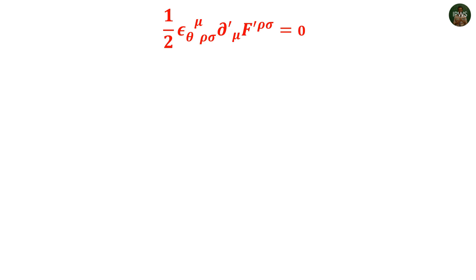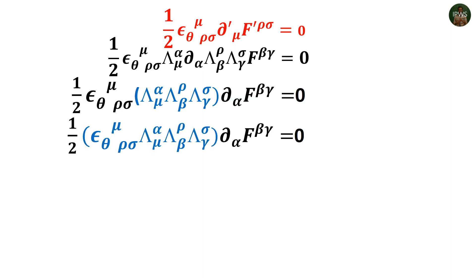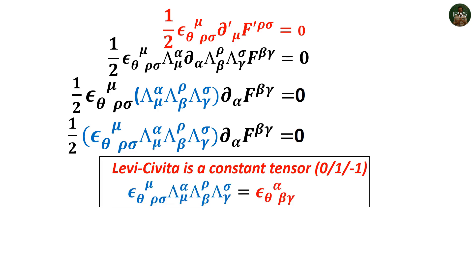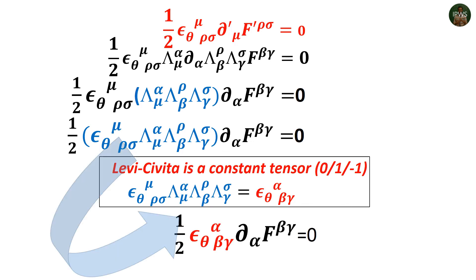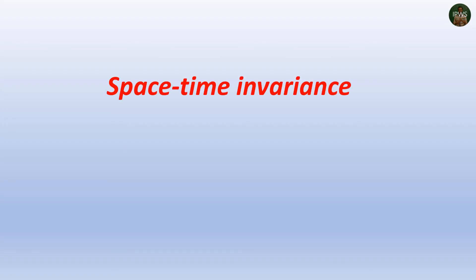For the source-free combined equation, (1/2) epsilon_(theta)^(mu)_(rho sigma) del'_mu F'^(rho sigma) = 0, the transformations yield three lambdas. Contracting these with the Levi-Civita tensor — which is constant with values 0, +1, or -1 — gives epsilon_(theta)^(alpha)_(beta gamma) del_alpha F^(beta gamma), which is exactly the untransformed Maxwell's form. It is thus proved that the Lorentz transformation defined in spacetime keeps Maxwell's equations invariant. We therefore no longer treat time as a separate entity, but rather spacetime as a single unified entity, which serves as the framework for special relativity.